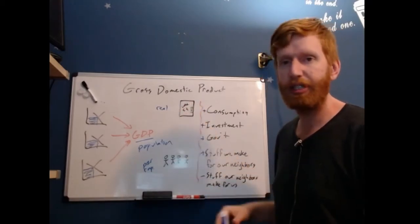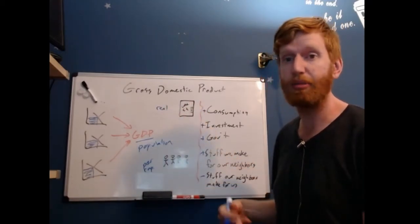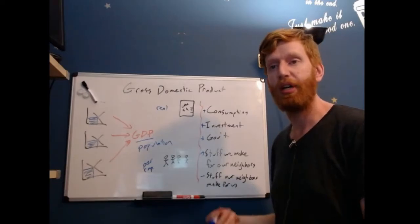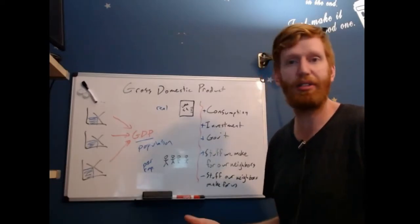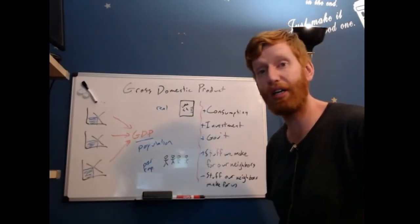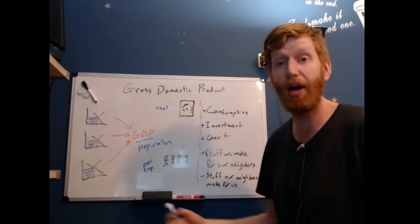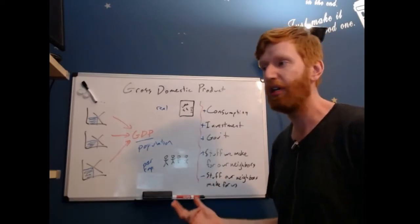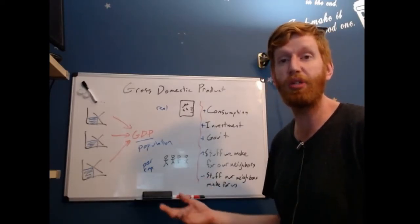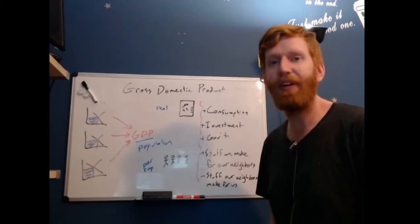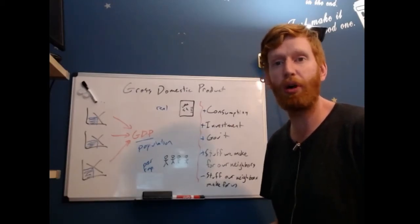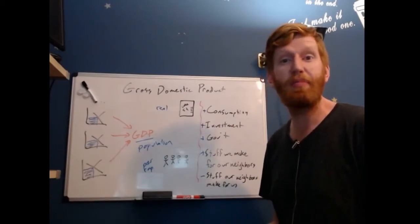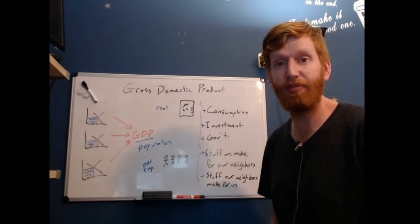We want to account for this in real terms, not nominal terms. In nominal terms, a Coke costs a buck fifty now; it used to cost five cents. But in terms of what you really have to give up to get a can of Coke, we might convert that into time—maybe five minutes for a low-skilled worker today versus twenty minutes fifty years ago.